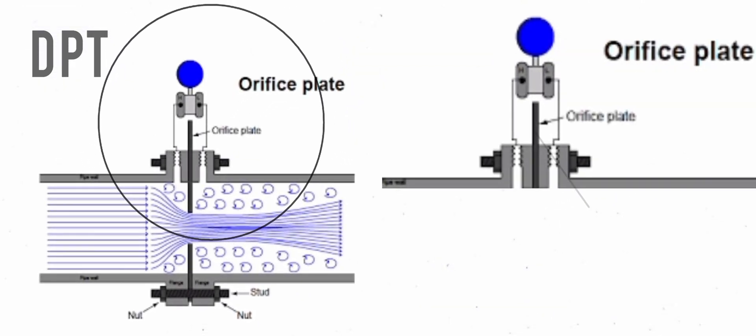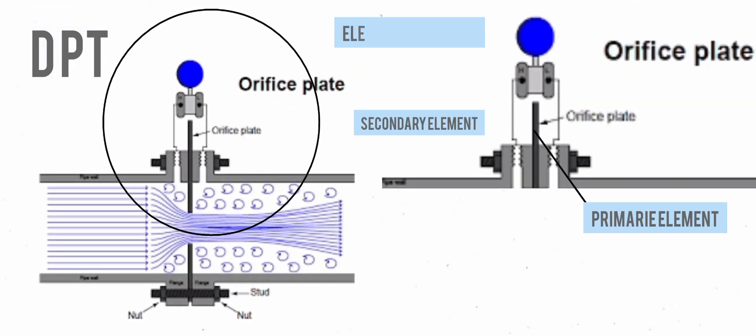DP transmitters will have a primary element, a secondary element, and an electronics system. The primary element will produce a difference in pressure as the flow in the pipe increases.